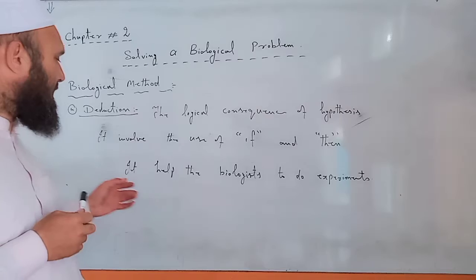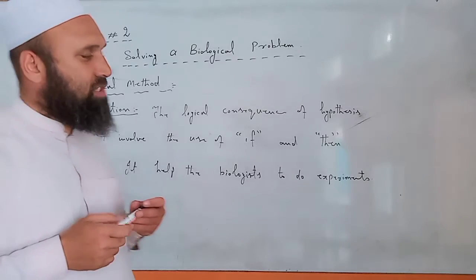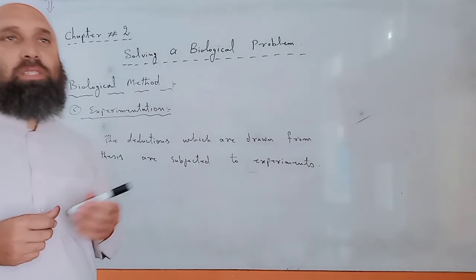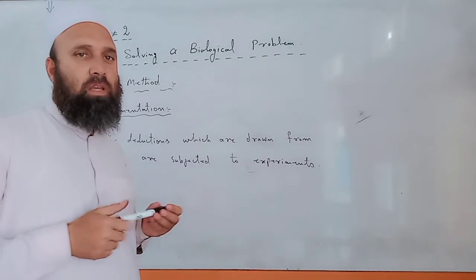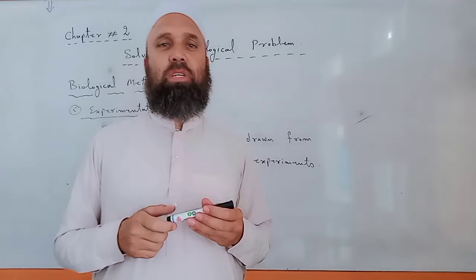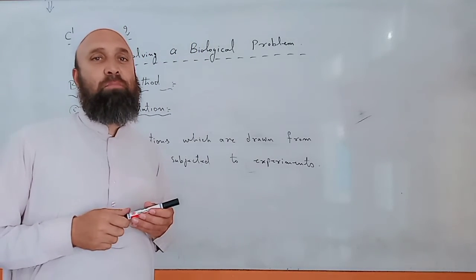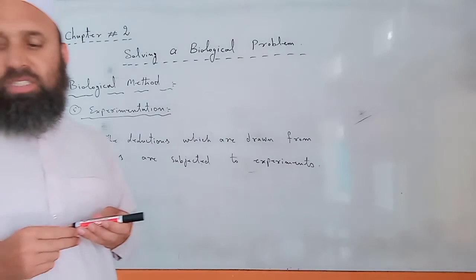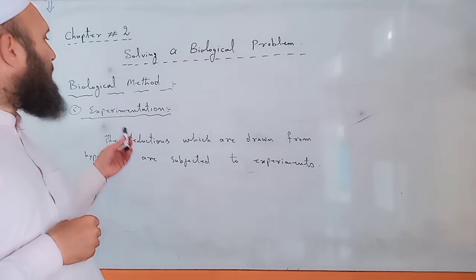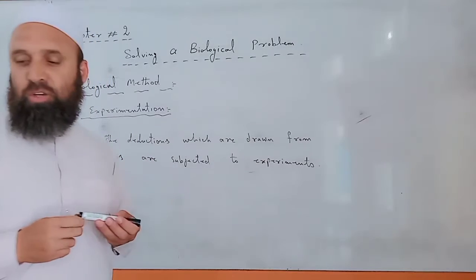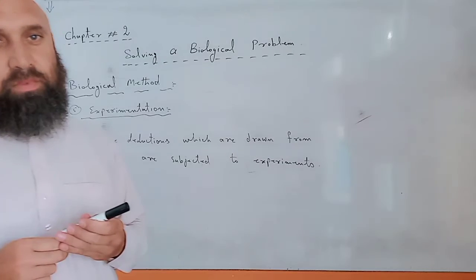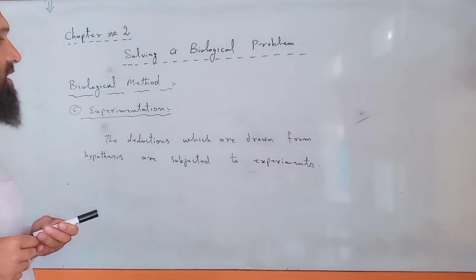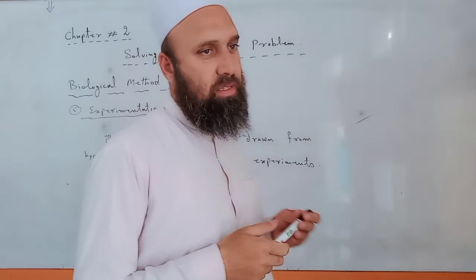In this deduction, there is an experiment. This means the biologist will do experiments. In biological method of study, the fifth step is experimentation. Experimentation is the most basic step in biological method of study. Biologists perform various experiments to see if hypothesis and deduction are true or not. The deduction drawn from hypothesis is subjected to various experiments.